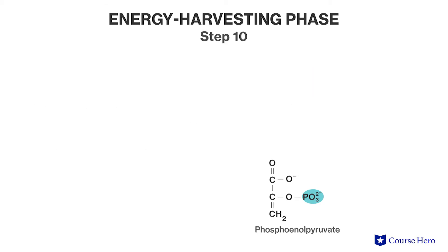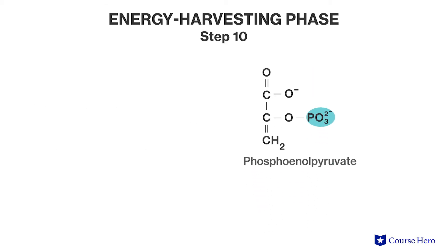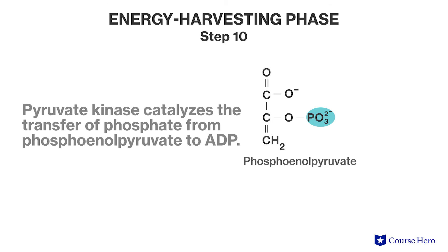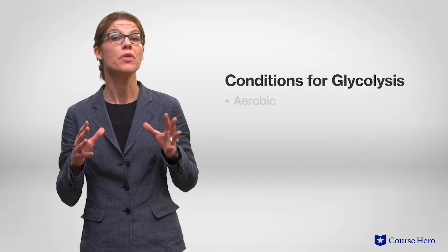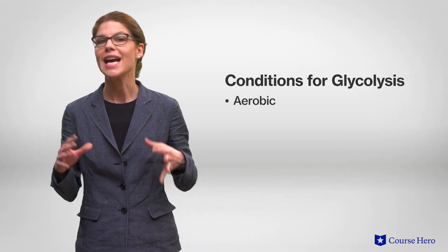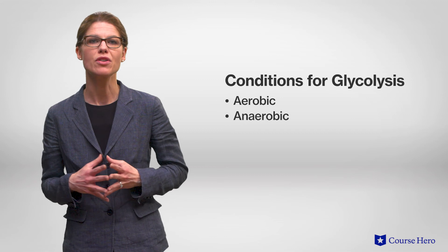Step ten: in this final step, pyruvate kinase catalyzes the transfer of a phosphate from phosphoenolpyruvate to ADP. This results in the formation of pyruvate and ATP. Remember that glycolysis occurs under both aerobic and anaerobic conditions.